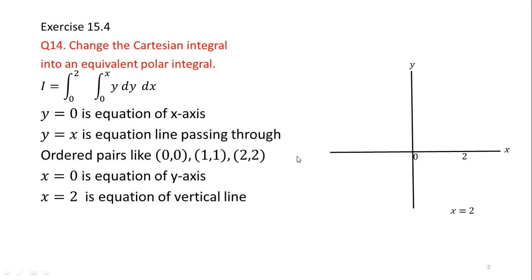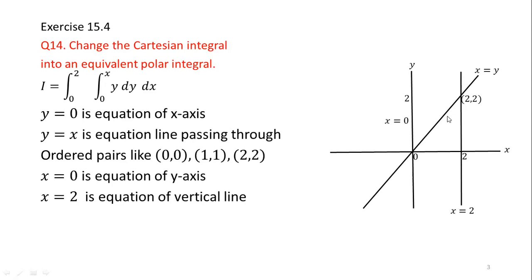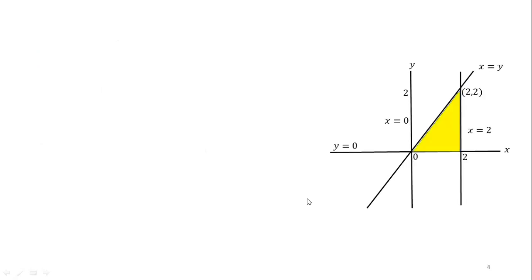Next, I will mark the point 2 along the x-axis. So here we have our region. This is a vertical line which passes through the point x equal to 2. This is the line where the value of x and y is the same, which is x equal to y. So their point of intersection is here at (2, 2). After plotting the region, we will sketch our region of integration.